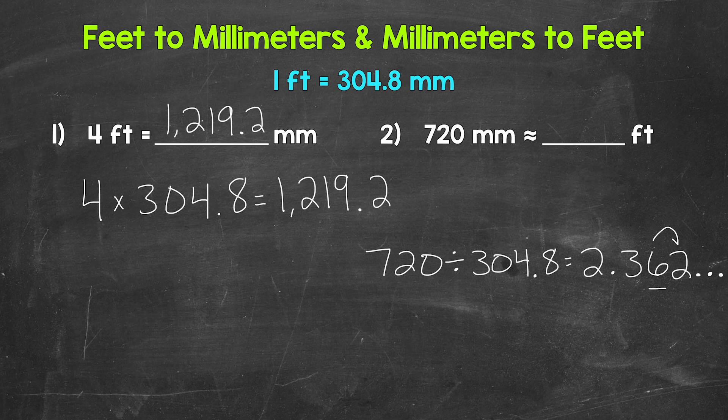We have a six in the hundredths place with a two in the thousandths. So this rounds to 2.36. So 720 millimeters is approximately 2.36 feet. And we have that approximately sign there instead of an equal sign because we rounded, so it's not exact.